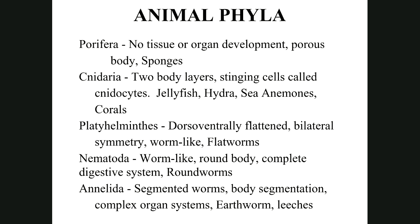Phyla in Animalia: Porifera — no tissue or organ development, porous bodies like sponges. Sponges have lots of holes; they're very porous. If you break a sponge into little pieces, they can reassemble. Cnidaria — the C is silent, pronounced 'nidaria' — two body layers, stinging cells called cnidocytes. Examples: jellyfish, hydra, sea anemones, and corals. Cnidocytes are like little harpoons with toxin similar to cobra venom that paralyze prey.